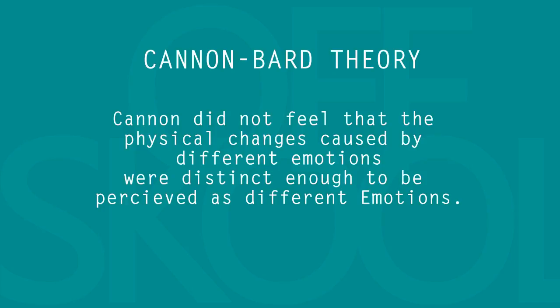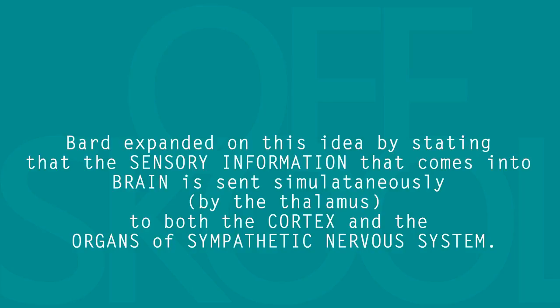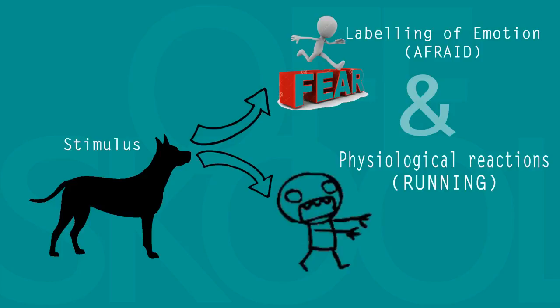Cannon did not feel that the physical changes caused by different emotions were distinct enough to allow them to be perceived as different emotions. Bard expanded on this idea by stating that the sensory information that comes into the brain is sent simultaneously by the thalamus to both the cortex and the organs of the sympathetic system. So, taking the example of the snarling dog again, according to them I would say: I am afraid and running.